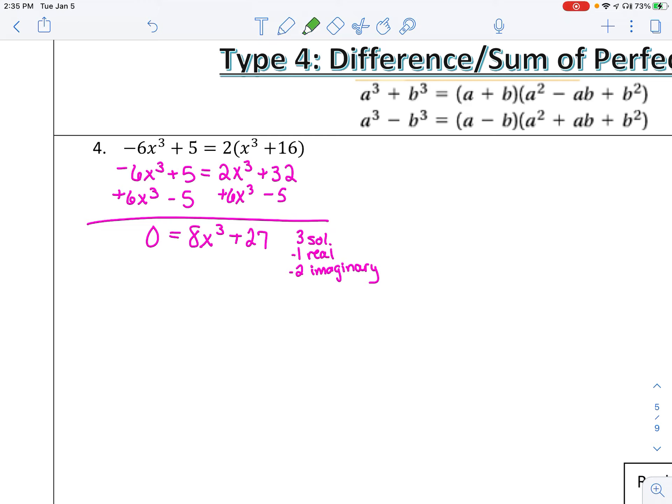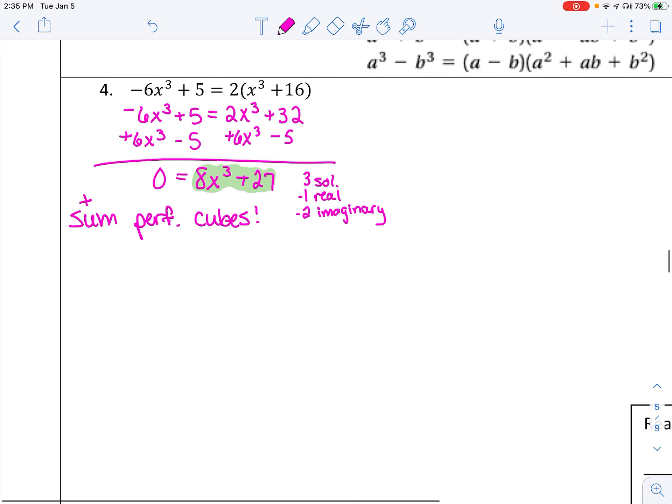So what you need to be able to see about this type of problem is that it is the sum, S-U-M, because it's an addition sign. And I need you to remember that those are perfect cubes. So you have never factored perfect cubes before. You have factored perfect squares, but never perfect cubes. So let me teach you how that works. It's a small parenthesis and then a longer parenthesis. And remember, all of this is set equal to zero.